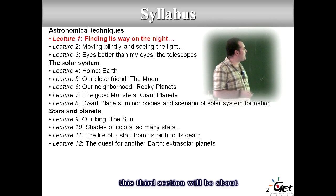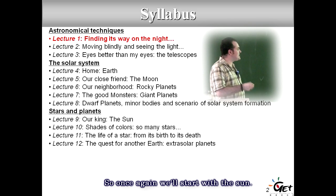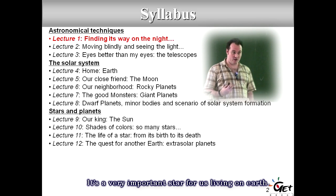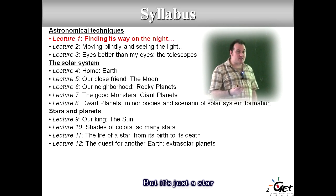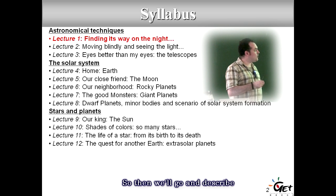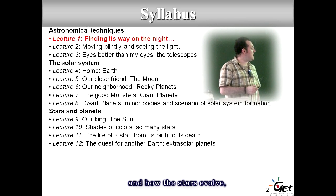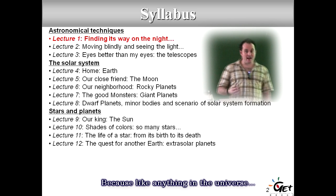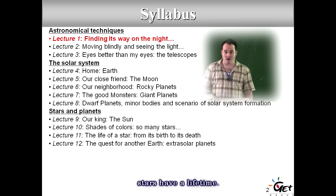The third section will be about stars and planets outside our solar system. We start with the Sun — it's just a star, very important to us on Earth, bringing us light and energy, but just a star like many others you can see at night. We'll describe the properties of stars, how they evolve, how they are formed, and how they die. Like anything in the universe, stars have a lifetime.